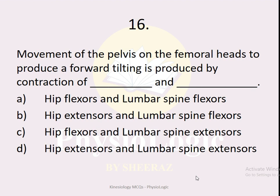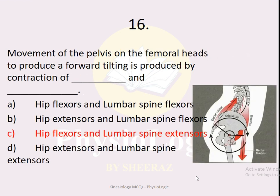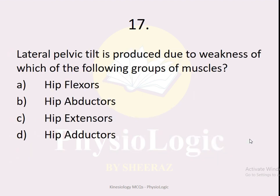MCQ number sixteen: the movement of the pelvis on the femoral heads to produce a forward tilting is produced by the contraction of which muscles? Options: A — hip flexors and lumbar spine flexors; B — hip extensors and lumbar spine flexors; C — hip flexors and lumbar spine extensors; D — hip extensors and lumbar spine extensors. The correct option is C. The lumbar extensors and hip flexors, when they contract, pull the pelvis into forward or anterior pelvic tilt.